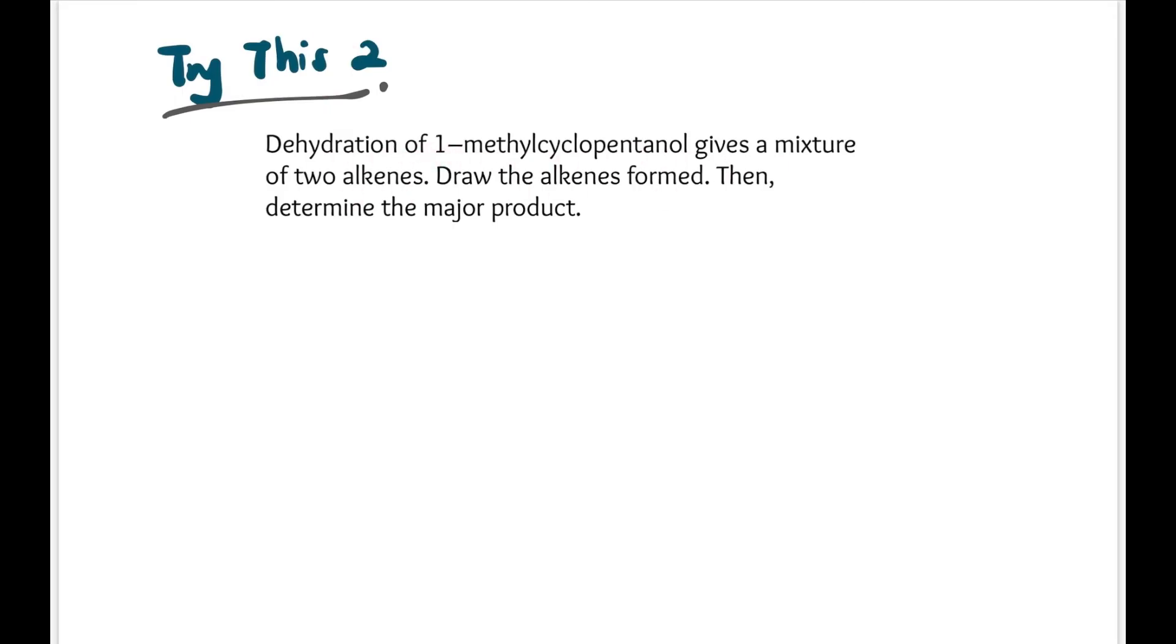Let's try this second one: Dehydration of 1-methylcyclopentanol gives a mixture of two alkenes. Draw the alkenes formed, then determine the major product. This is our 1-methylcyclopentanol. We'll learn more about naming in the alcohol chapter later. From this structure, if we react it with concentrated H2SO4 and heat, we have two options. If we pick the OH, its adjacent carbon can be the top or the green one.